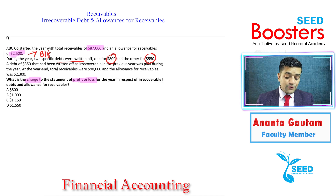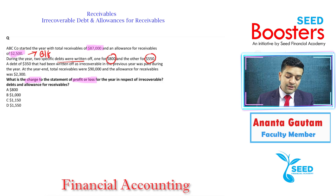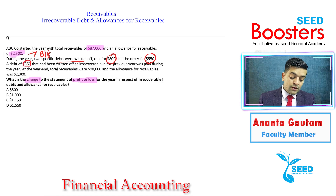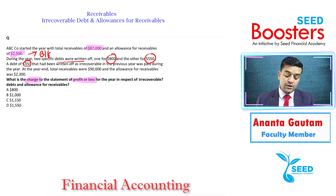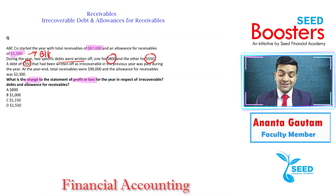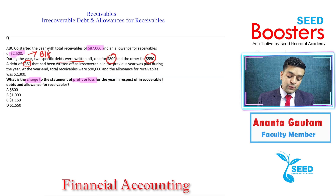A debt of 350 that had been written off as irrecoverable in the previous year was paid during the year. At the year end, total receivables were 90,000.